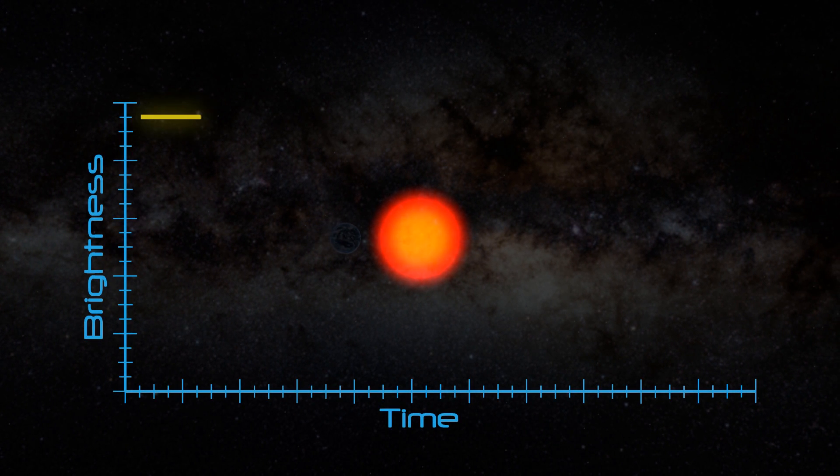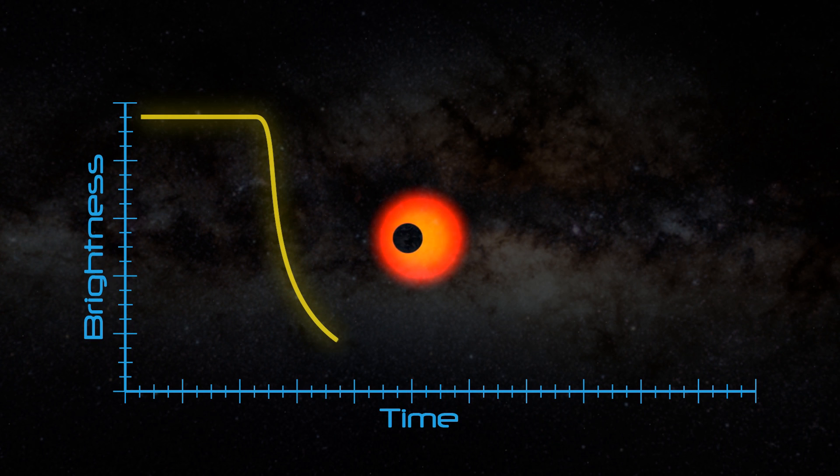When a planet passes in front of its home star, it blocks some of the star's light. The Kepler Space Telescope looked for distant worlds by measuring this dip in the star's glow.